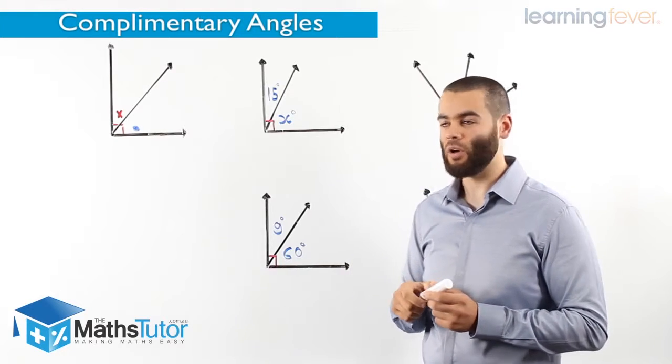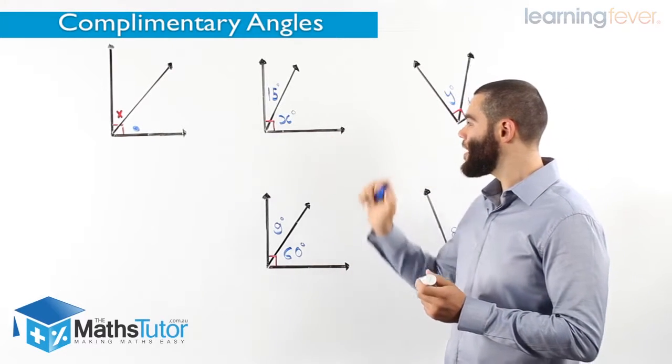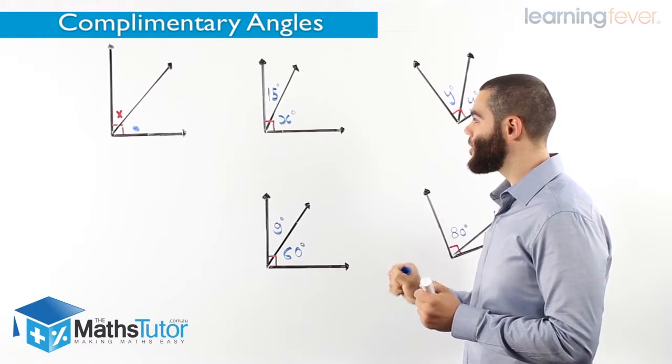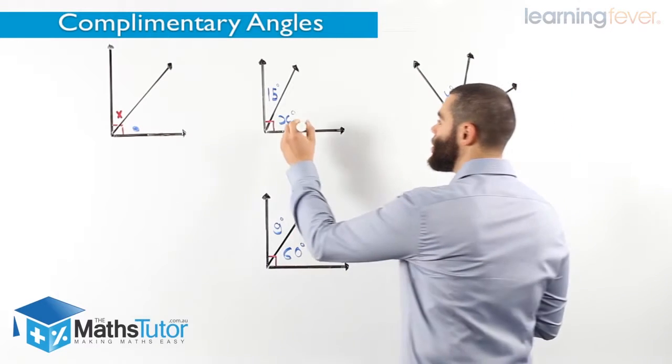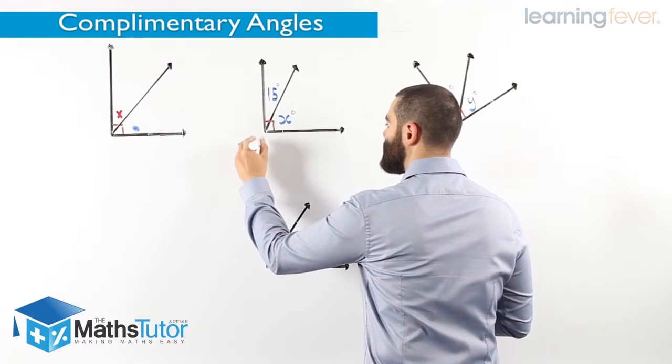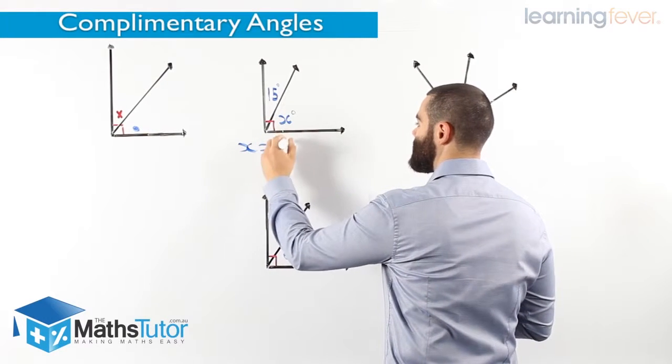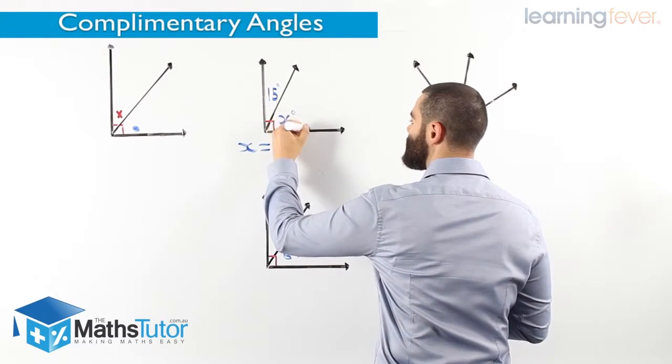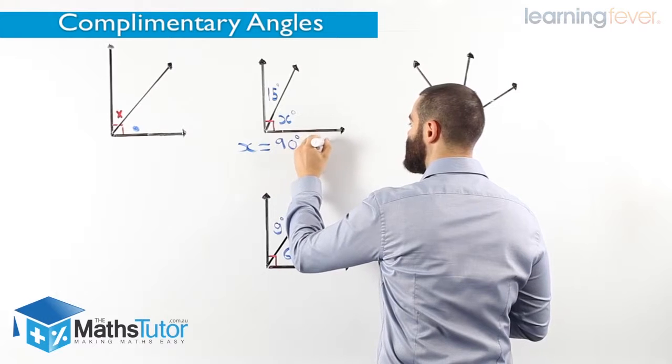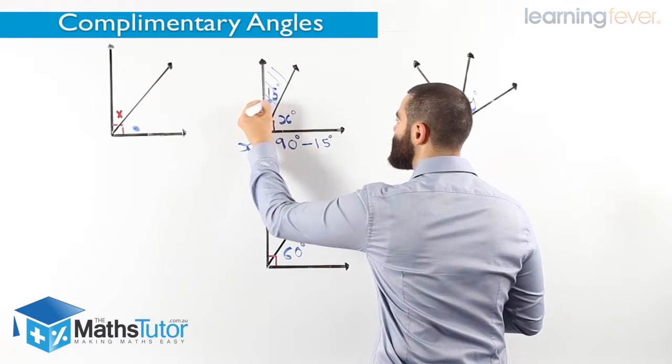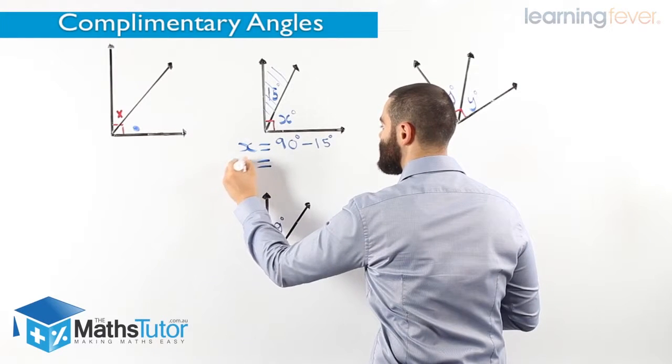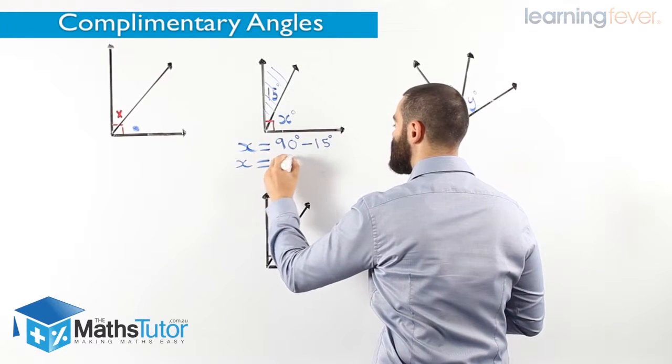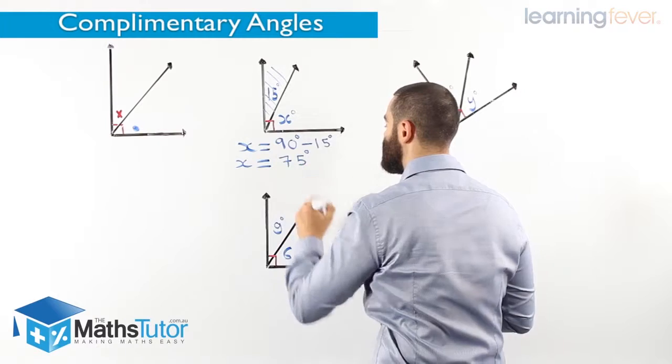Let's see an example and see how it actually works. We have a right angle here, and we're basically looking for x. We know that the right angle is 90 degrees, so we say 90 degrees is the total. Take away 15 degrees, so we're taking away this angle. We're going to be left with x, so x is 90 take away 15, which is 75 degrees.